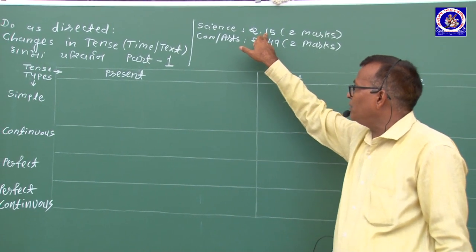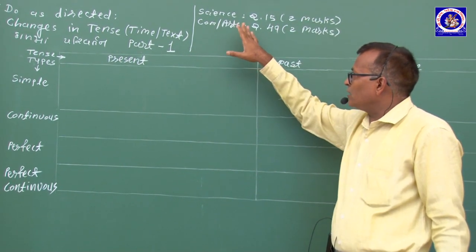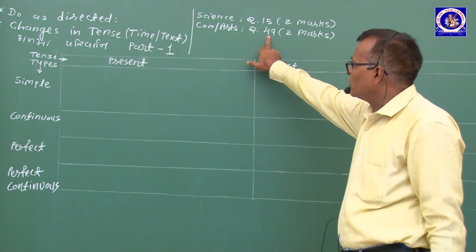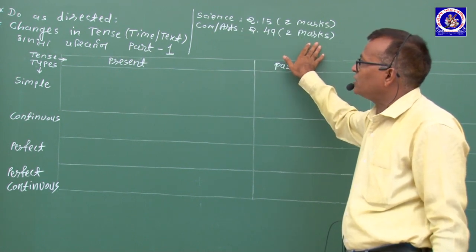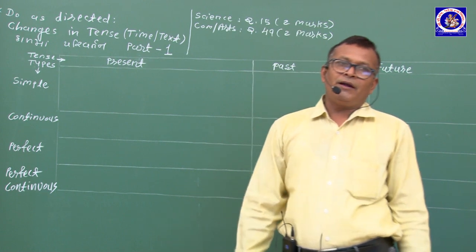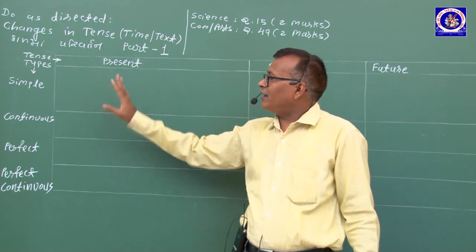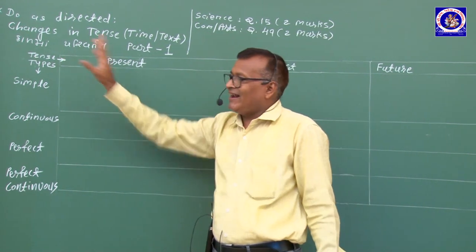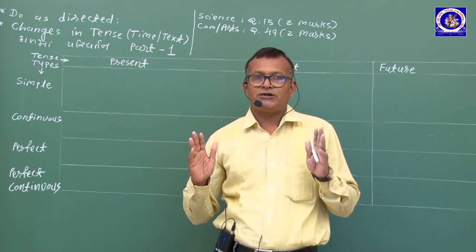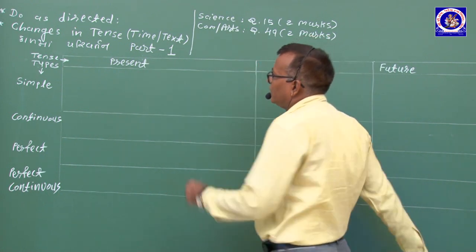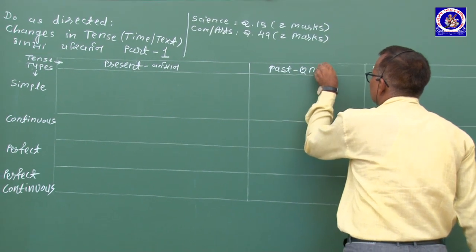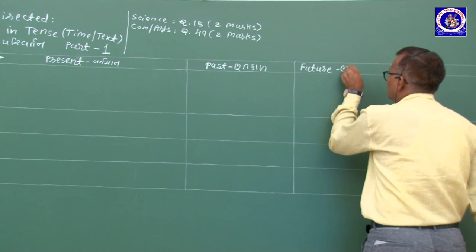Paragraph (Trans Paragraph) — Part Bમાં બે માર્કનો ટોપિક પૂછવામાં આવે છે. Tense means Time, Time means કાળ. કાળના ત્રણ પ્રકાર છે: Present (વર્તમાન), Past (ભૂતકાળ), Future (ભવિષ્ય).